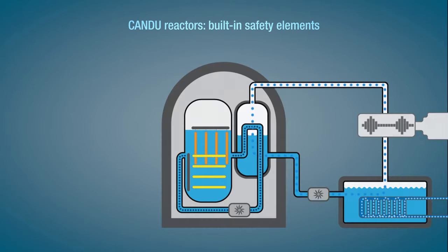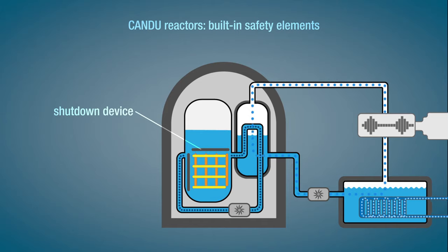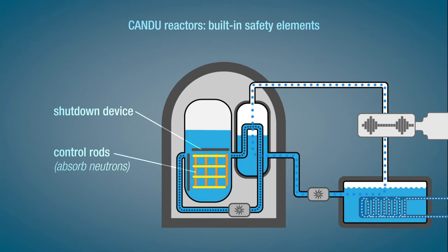In the event of a complete power failure, a shutdown device held in place by electromagnets automatically drops under gravity into the core to shut down the reaction. It works by using neutron-absorbing rods that kill the reaction. Remember, neutrons are needed to ensure that the fission reaction continues.